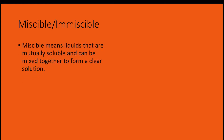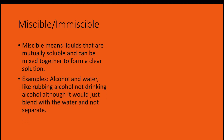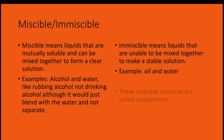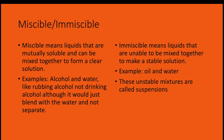Miscible means liquids that are mutually soluble and can be mixed together to form a clear solution. Examples: alcohol and water — rubbing alcohol, not drinking alcohol — although it would blend in with the water and not separate like oil and water would. Immiscible means liquids that are unable to be mixed together to make a stable solution; the example is oil and water.